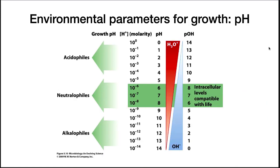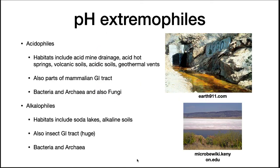A second important parameter for growth is pH. Microorganisms must have an internal pH of between 6 and 8 for the proper functioning of cellular metabolism. If the environmental pH gets outside this range, then the bacterium has to compensate by either pumping protons in or out of the cell to keep its internal pH in an acceptable range. Those that can survive acidic conditions — pH less than 5 — are acidophiles. Those that grow best at pH 6 to 8 are neutrophiles, and those that grow best above pH 9 are alkalophiles.